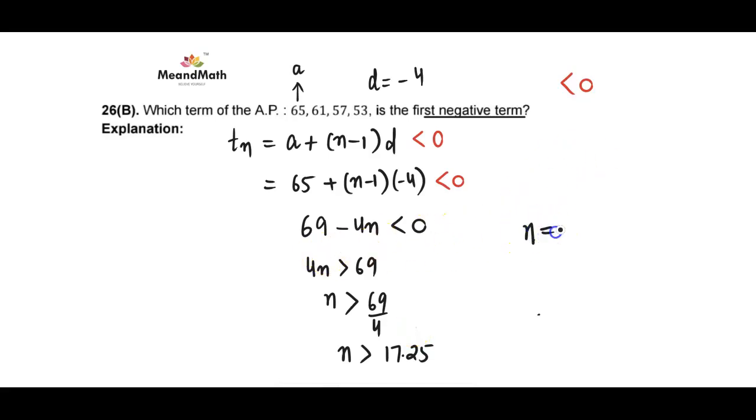That means the value of n - which term? The term is 18th, right? The 18th term is the first term that has a negative value. Let's verify. If you substitute 18: 69 take away 4 times 18. If you simplify that, you get minus 3. Negative 3, that means it's coming negative.